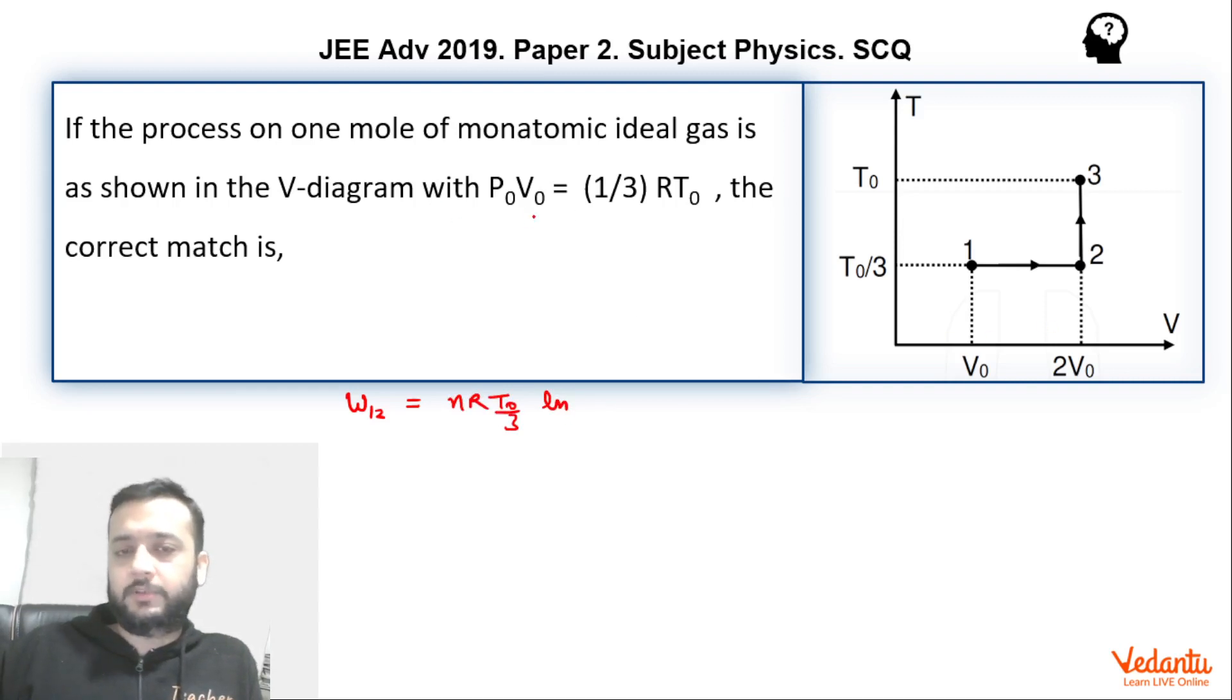One more important thing was given. P0V0 equals 1/3 RT0. So we can say that P0V0 value is nothing but 1/3 RT0. That means and since n is 1, n is 1, so remember moles is one. One mole.